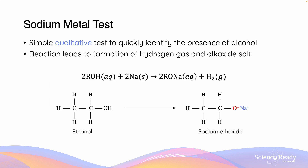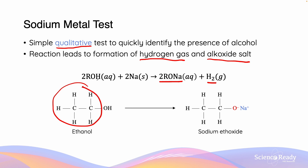The sodium metal test is a quick qualitative test which is used to quickly identify the presence of an alcohol. Looking at our general equation, ROH — with R being the substituent carbon chain — reacts with Na sodium to form hydrogen gas (H₂) and an alkoxide salt (RONa). Looking at our diagram, ethanol is a representation of ROH with the R group being C₂H₅ and the OH being the OH. We can similarly see the same R group in the sodium ethoxide alkoxide salt.